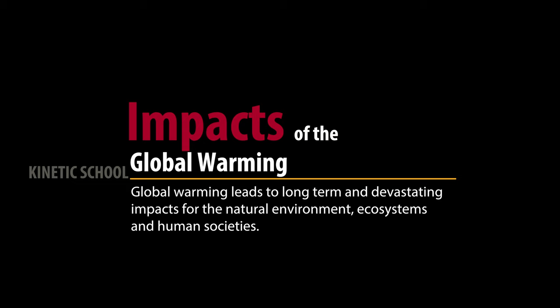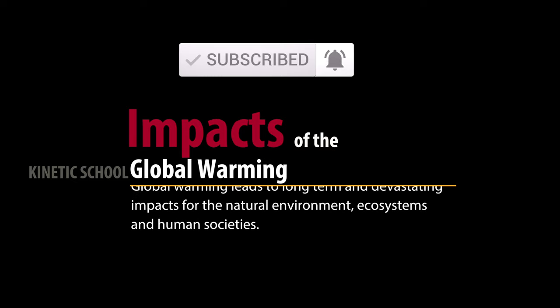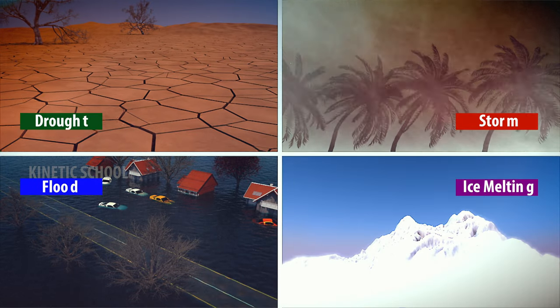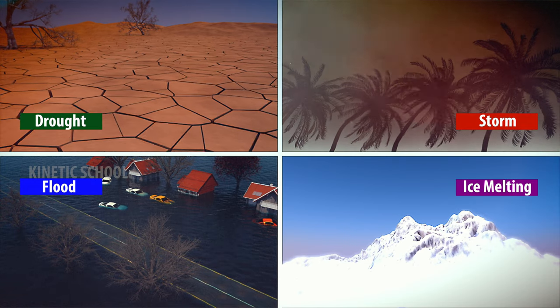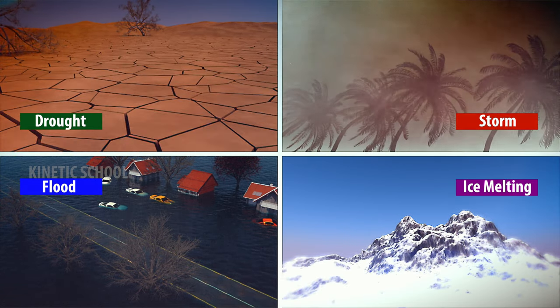Impacts of global warming. Global warming leads to long-term and devastating impacts for the natural environment, ecosystems, and human societies, such as drought, flood, storm, ice melting, etc.